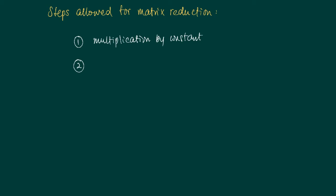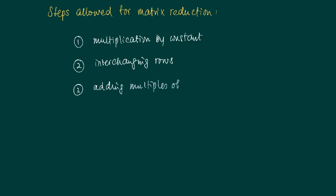The three allowed manipulations are: first, multiplication of a row by a non-zero constant; second, interchanging of rows — interchanging, say, the third and fifth equation does not alter the solution of a system of linear equations; and third, adding multiples of rows to other rows.